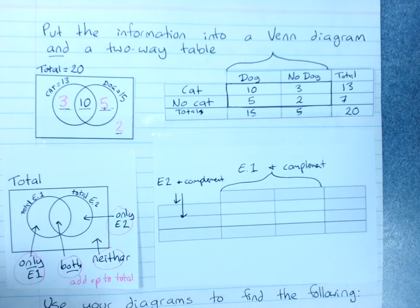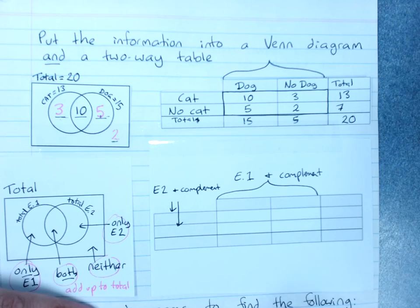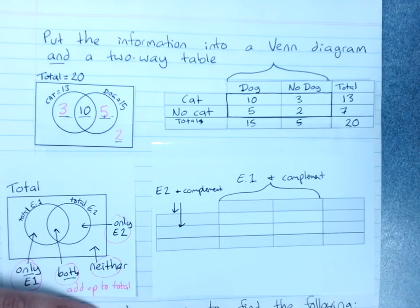So, it's usually easier to make a Venn diagram and then make a two-way table.